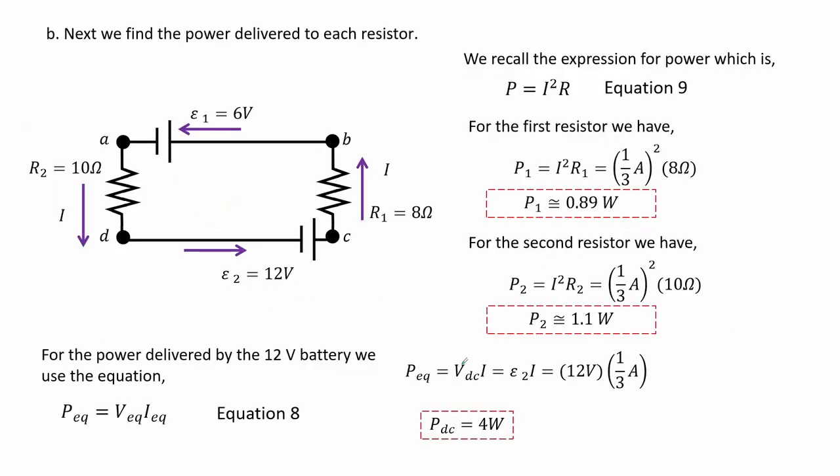For letter B, we find how much power is delivered when we use equation 9. For the first resistor we see that the power is about 0.89 watts. For the second resistor we have power equal to about 1.1 watts.